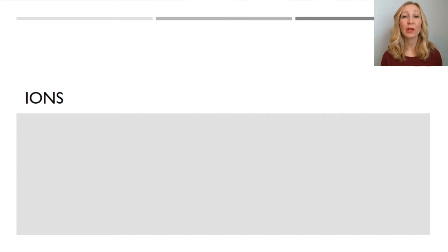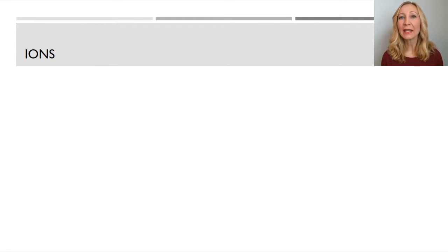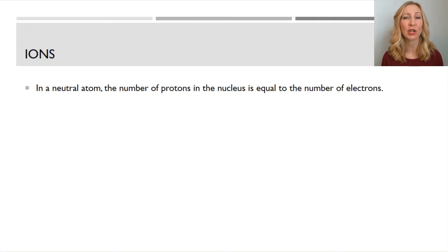In this video, we are going to talk about how atoms become ions. First, you should have a good understanding of what an atom consists of, and how to figure out how many protons, neutrons, and electrons an atom has.